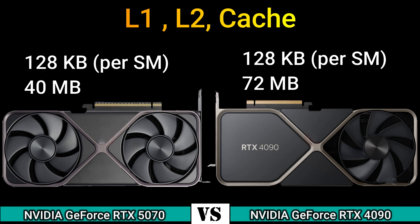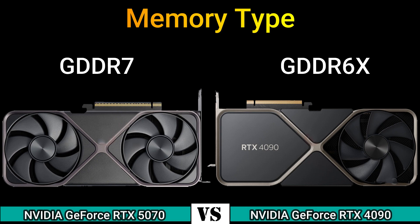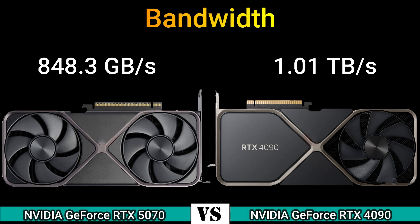L2 cache: 128 KB per partition, 40 MB and 128 KB per partition, 72 MB. Memory size: 12 GB and 24 GB. Memory type: GDDR7 and GDDR6X. Memory bus: 192-bit and 384-bit. Bandwidth: 848.3 GB/s and 1.0 TB/s.